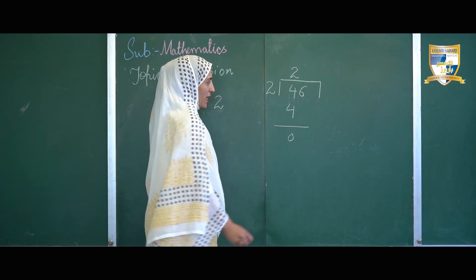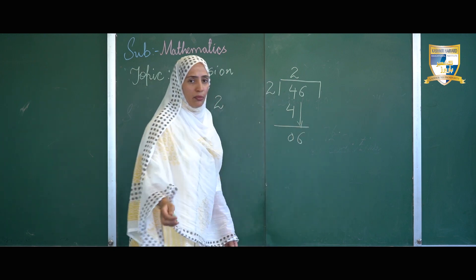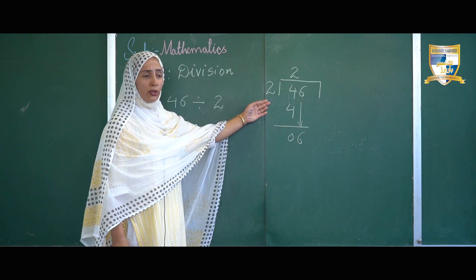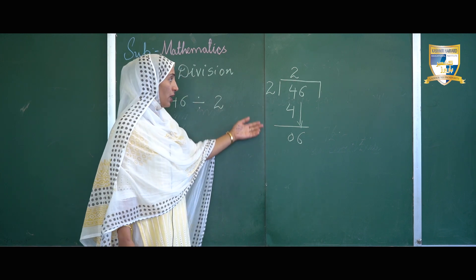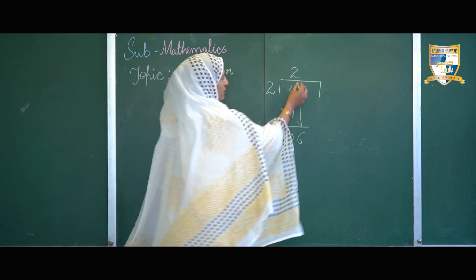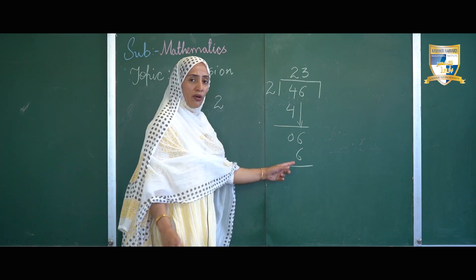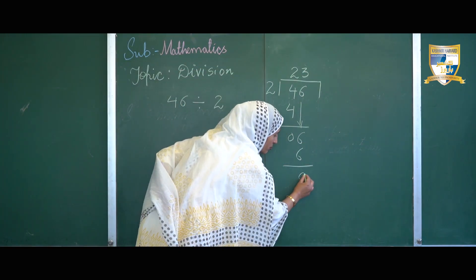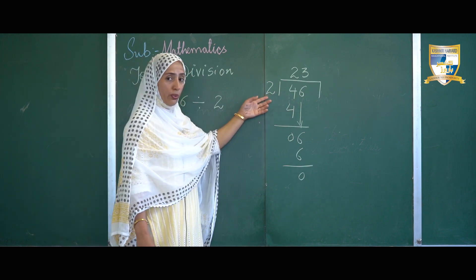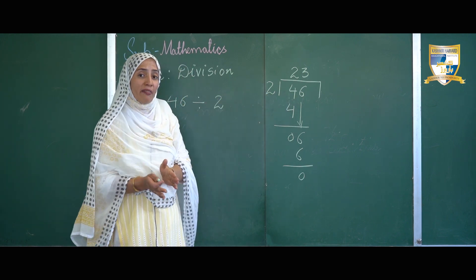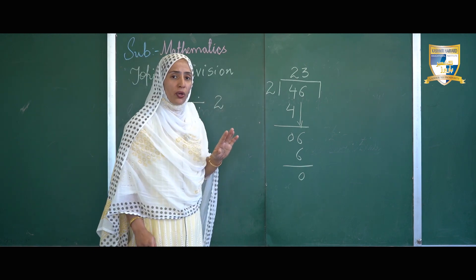Now I'll bring down number 6. What is to be multiplied to 2 so that we get 6 or almost 6 but not greater than 6? 2 threes are 6. 6 out of 6, we are left with 0. In this division problem, we have divided 46 by 2. It implies if we divide 46 into 2 equal groups, we'll have 23 in each group.